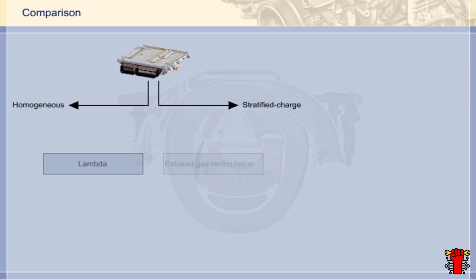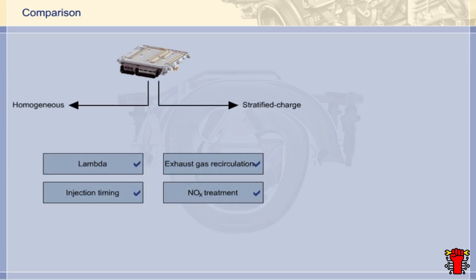The most crucial limiting factor to be taken into account is the status of the NOx catalysts. Here is a brief overview of the main functional differences between homogenous operation and stratified charge operation. A more detailed analysis of these differences can be found in the study program on direct injection petrol engines.